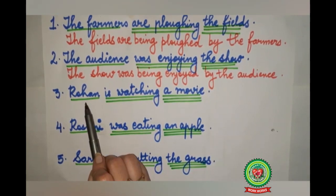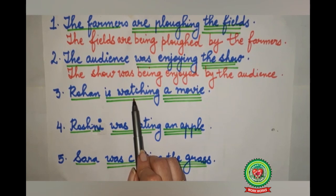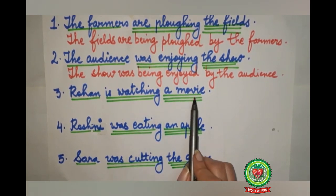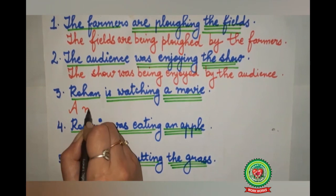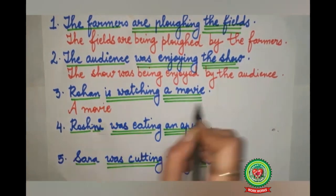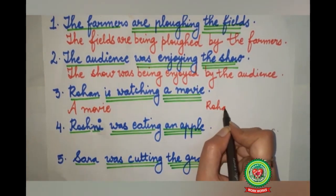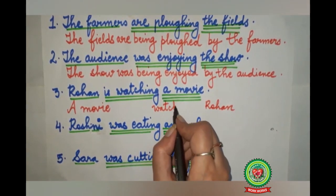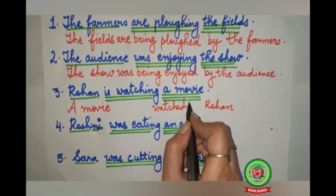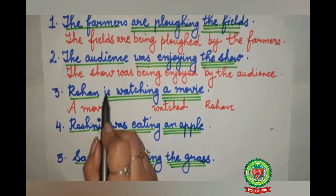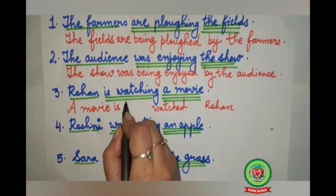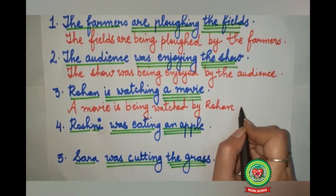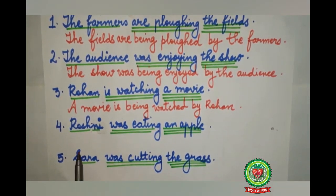Third sentence: 'Rohan is watching a movie.' Who? Rohan — subject, single underline. 'Is watching' — verb, double underline. What? A movie — triple underline. A movie comes in the beginning, Rohan goes to the last. 'Watching' changes to 'watched'. A movie is singular, so 'is' remains. The answer: 'A movie is being watched by Rohan.' Full stop.